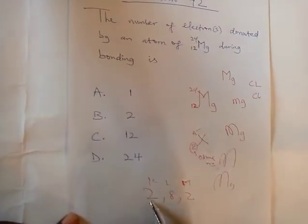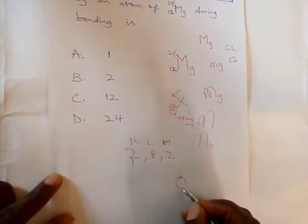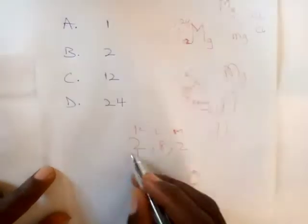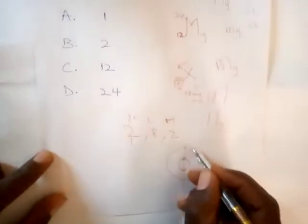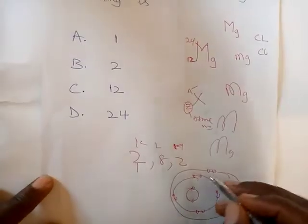So 2. You know, this one will serve as the octet. If you draw it, if you use dot and cross. Okay, we have a 2, the next shell, we have 8. 1, 2, 3, 4, 5, 6, 7, 8, and the last 2, we have 1, 2, and this one is Mg.